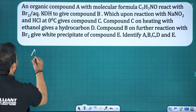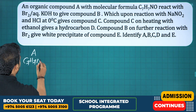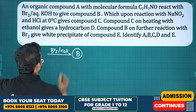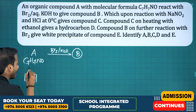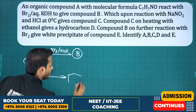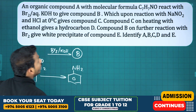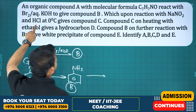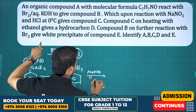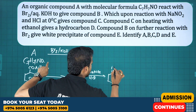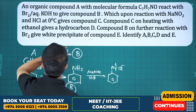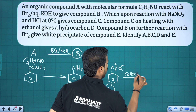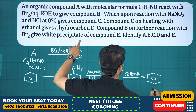An aromatic compound A with formula C7H7NO reacts with KOH giving compound B. C7H7NO is benzamide. Benzamide on Hofmann degradation gives aniline — compound B. Aniline on treatment with NaNO2 and HCl (diazotization) gives diazonium salt (N2+Cl-) — compound C.